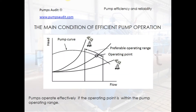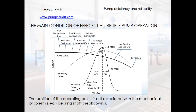The answer is quite simple: the pump operates effectively if the operating point is within the pump's operating range. If the operating point lies outside the operating range, the pump operates with low efficiency. The same applies to pump reliability — very often pump users do not connect mechanical problems with the position of the operating point.